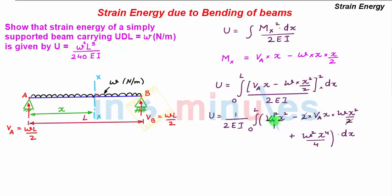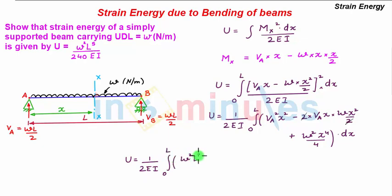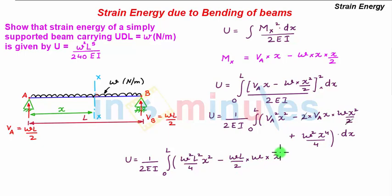Substituting VA = WL/2, strain energy U = (1/2EI) · ∫₀ᴸ [W²L²/4 · x² − (WL/2)·W·x³ + W²x⁴/4] dx.